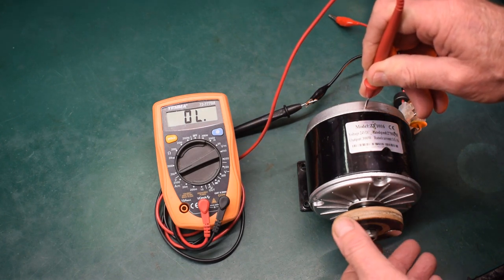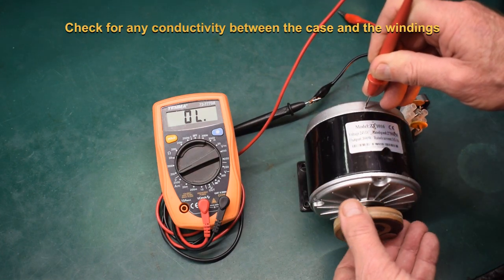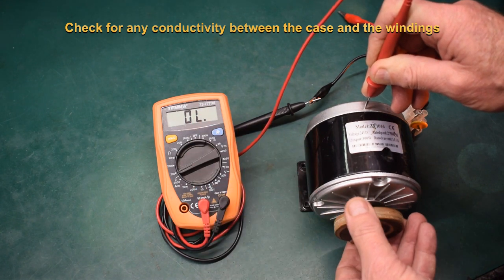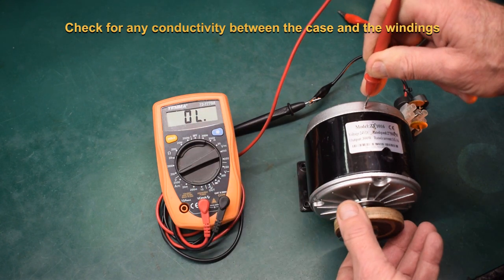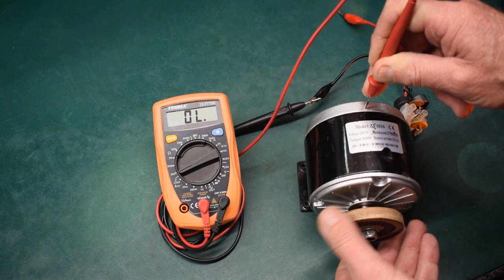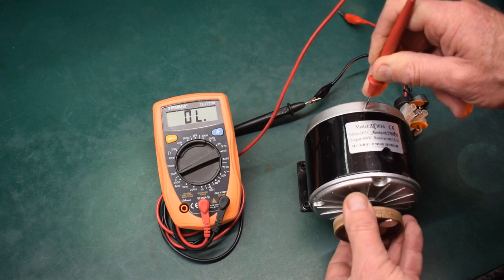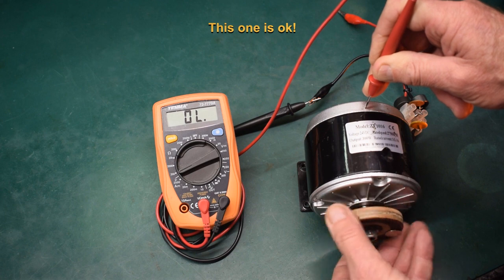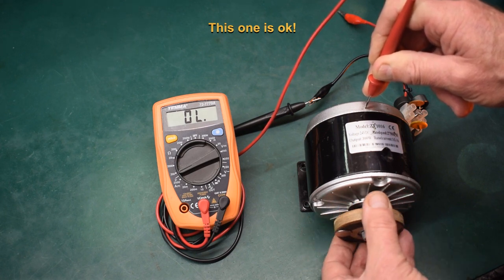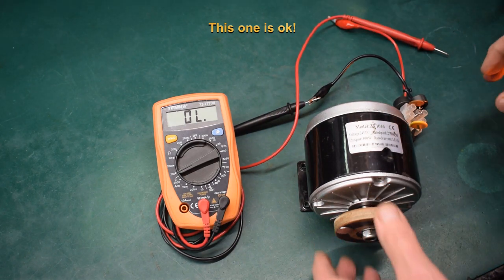Again we're going to rotate the motor through one revolution and we're looking for any conductivity between the case of the motor and the windings. You can do this one a little bit faster. Get that all the way around back to start and no continuity detected there, so that motor is okay.